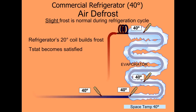The thermostat is satisfied, the box temperature is at 40 degrees, and now the compressor has stopped. There's no more refrigeration happening, and the coil temperature becomes approximately 40 degrees. The fans always stay on in the refrigerator.